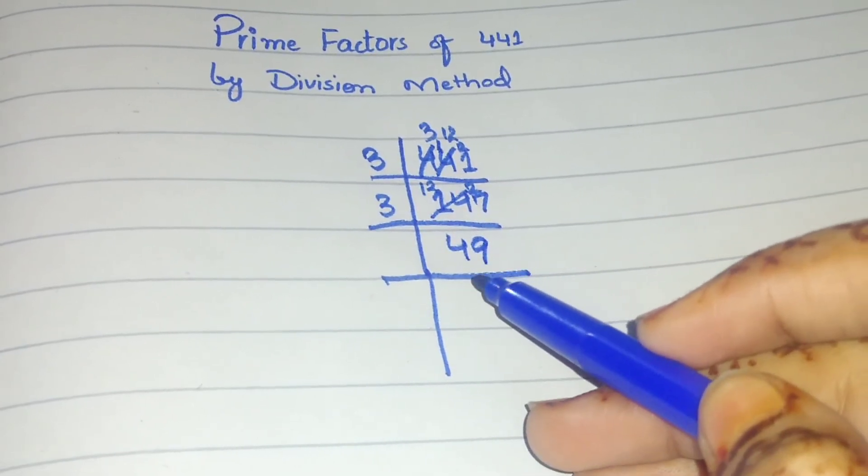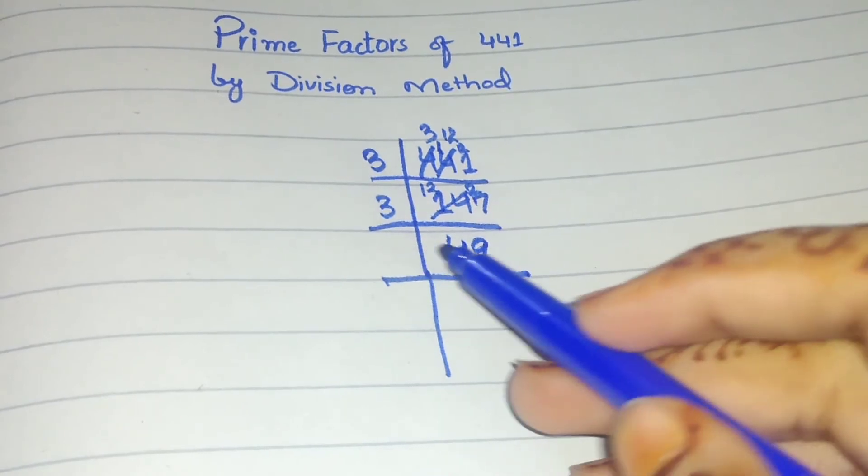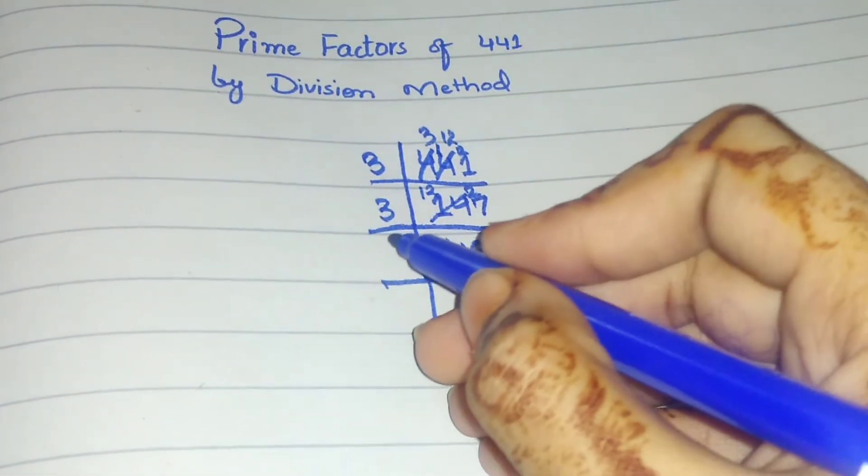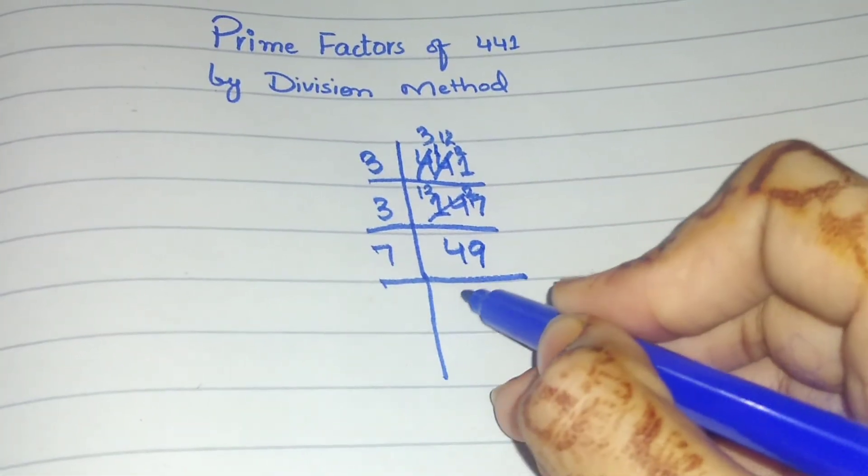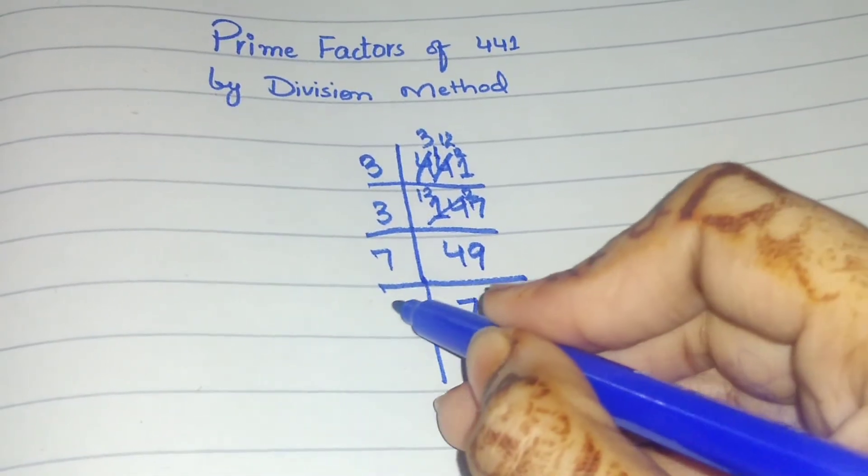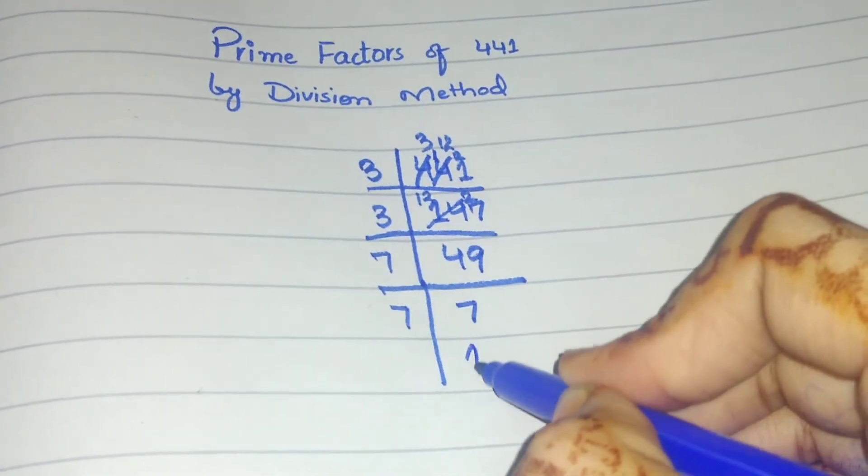The next prime number is 7. In the 7 table, 7 times 7 is 49. So we divide 49 by 7 to get 7. Then we divide 7 by 7 to get 1. Now we have reached 1, so 441 is completely divided.